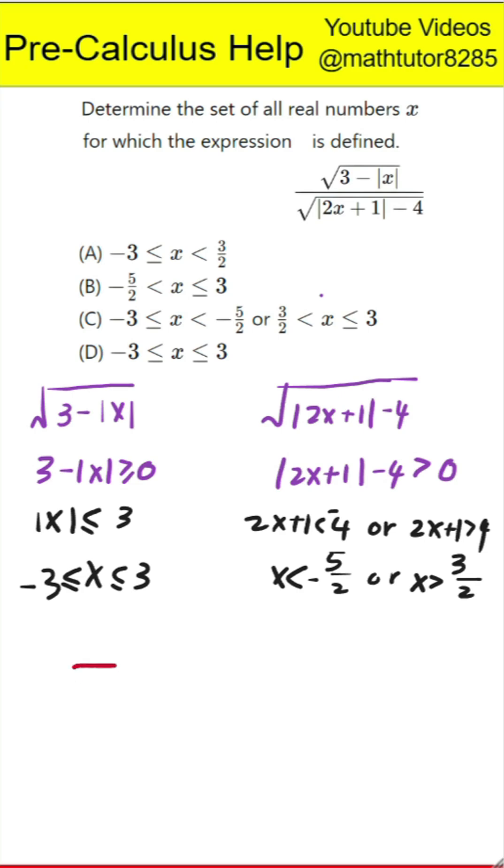Next step is to combine the two conditions. Now we intersect both requirements. The first tells us x must be between negative 3 and 3. The second tells us x must either be less than negative 2.5 or greater than 1.5. So the final valid range for x is,